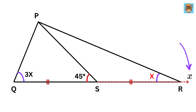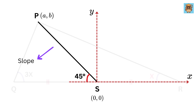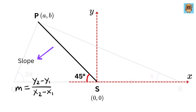Assume this is the X-axis and this is the Y-axis, and let us label point S as (0, 0), which is the origin of this coordinate system. Now let point P equal (A, B). So, what will be the value of the slope of line PS? The slope between two points is given using this formula. Therefore, the slope between PS will be B minus 0 over A minus 0, or B over A.